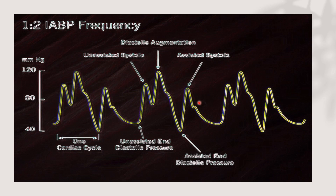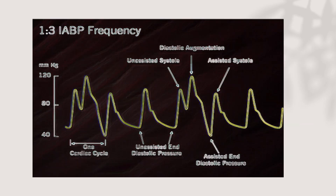One to two is used as a weaning parameter for the balloon or during waveform interpretation, and also for tachycardia with heart rate more than 100. One to three intra-aortic balloon frequency means that every three beats, only one is assisted. Every two unassisted beats, we have one assisted beat, and this is one of the weaning parameters for the intra-aortic balloon pump.